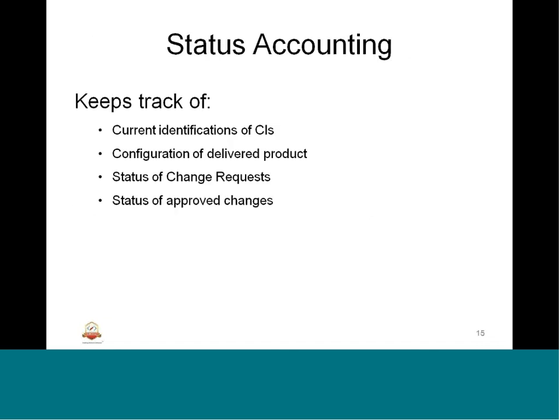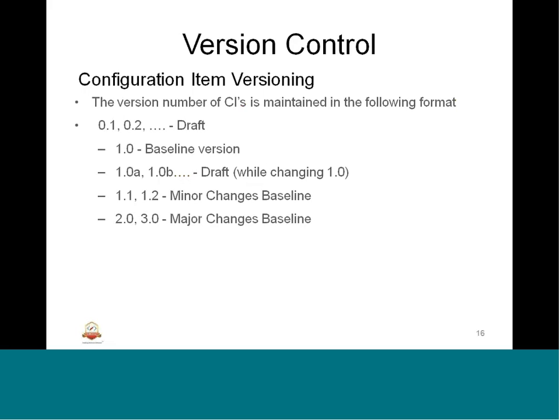Status accounting keeps track of CIs, delivered products, when delivered, what changes occurred, and what change requests were approved. Configuration item versioning is important: we identify draft versions, baseline versions, minor changes baselines, and major changes baselines. Drafts are usually in fractional increments like 0.1, 0.2, etc. Baselines are whole integers like 1, 2. Intermediate versions keep track as 1.1, 1.2, etc.